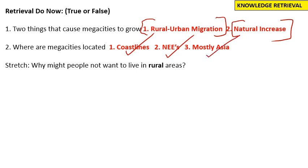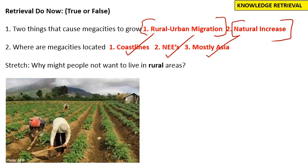Although today we are going to look at a megacity in Africa, in the country of Nigeria, and it is called Lagos City. Why might people not want to live in rural areas? Well, one reason might be that in the countryside the economic opportunities are low. There are not many opportunities to earn high salaries because people may be on farms. We're going to explore this in more detail today.